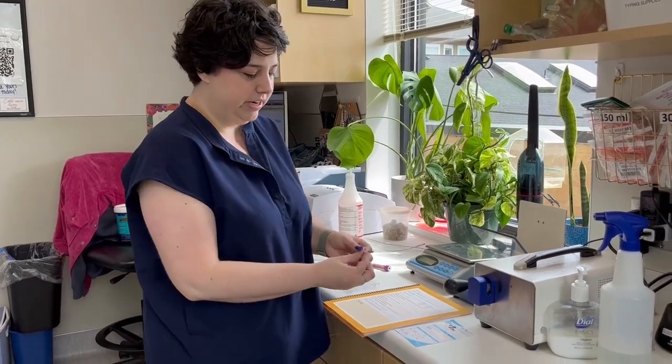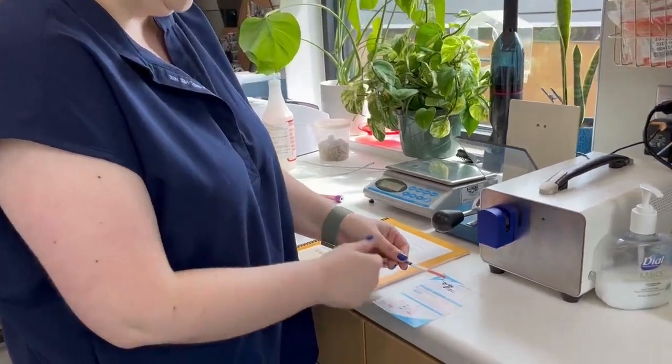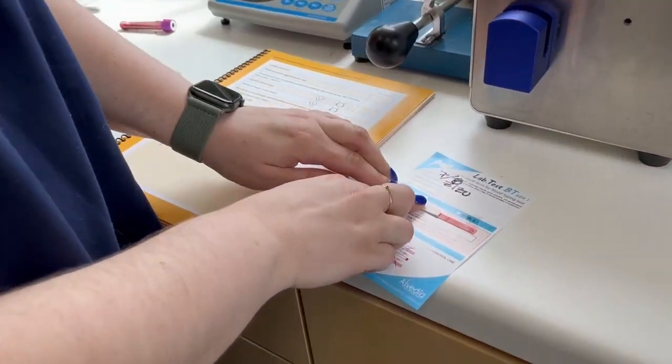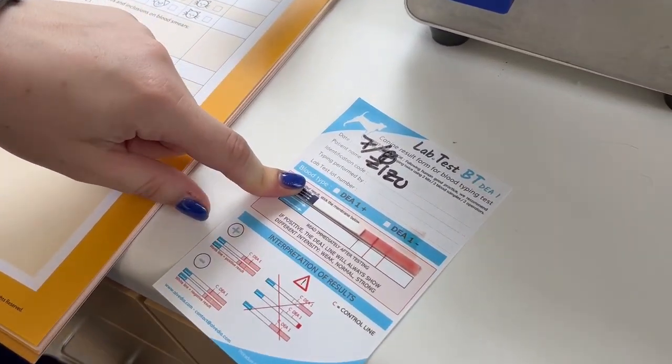Okay, so our test is ready to read now. The blood has worked all the way up. Our control line is present and then we can just lay it next to the test and figure out what our results are.